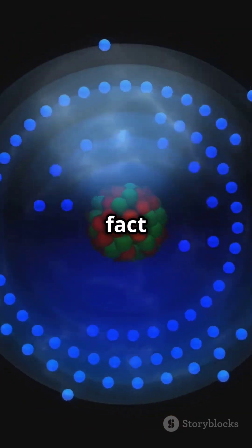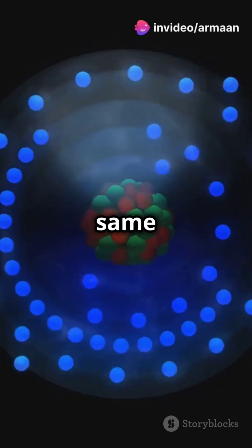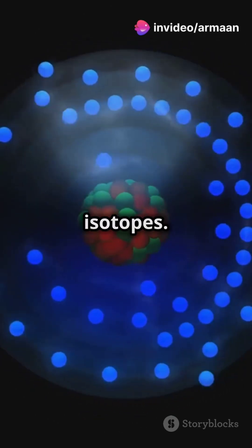Here's a cool fact. The number of neutrons can change in different atoms of the same element, creating what we call isotopes.